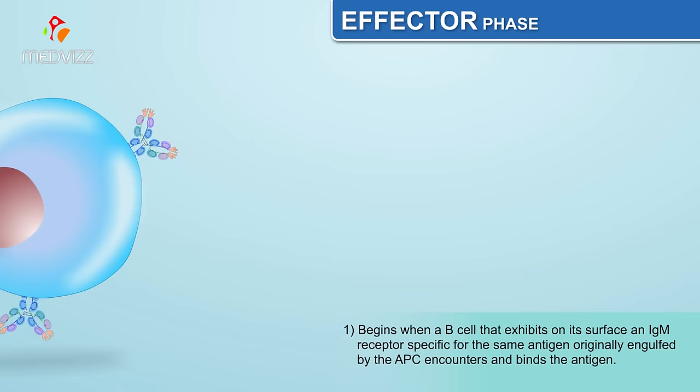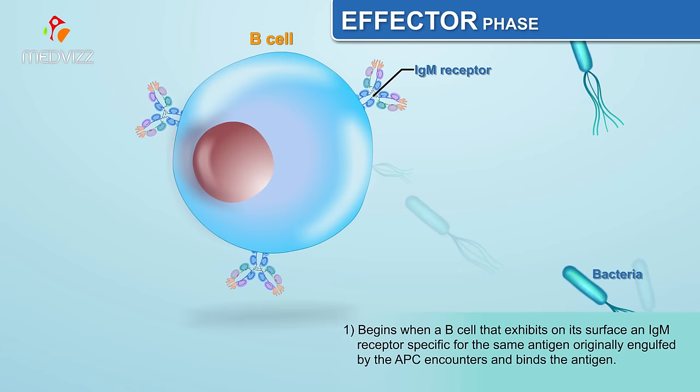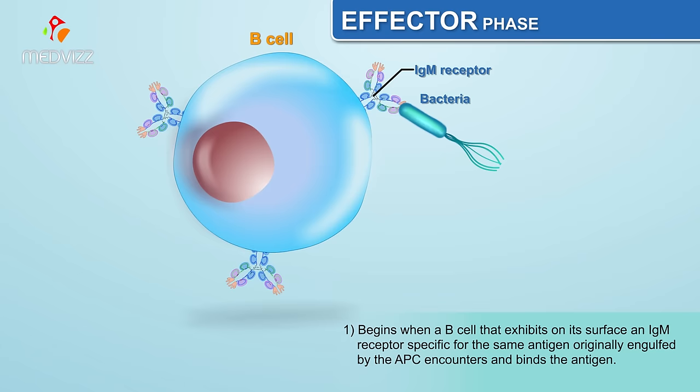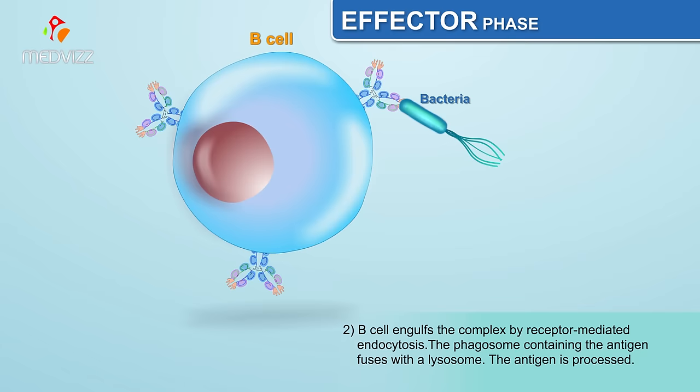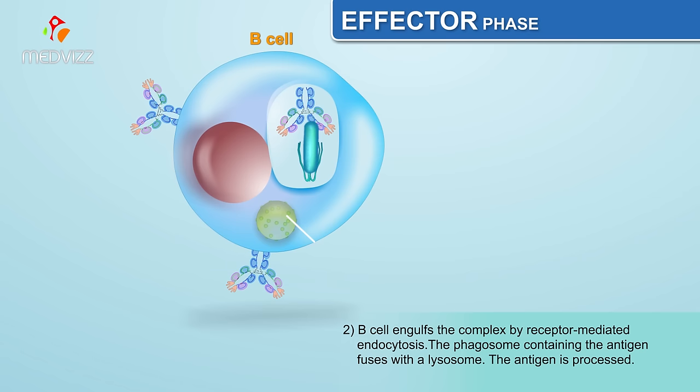The effector phase begins when a B cell that exhibits on its surface an IgM receptor specific for the same antigen originally engulfed by the APC encounters and binds the antigen. The B cell engulfs the complex by receptor-mediated endocytosis, and the phagosome containing the antigen fuses with a lysosome.